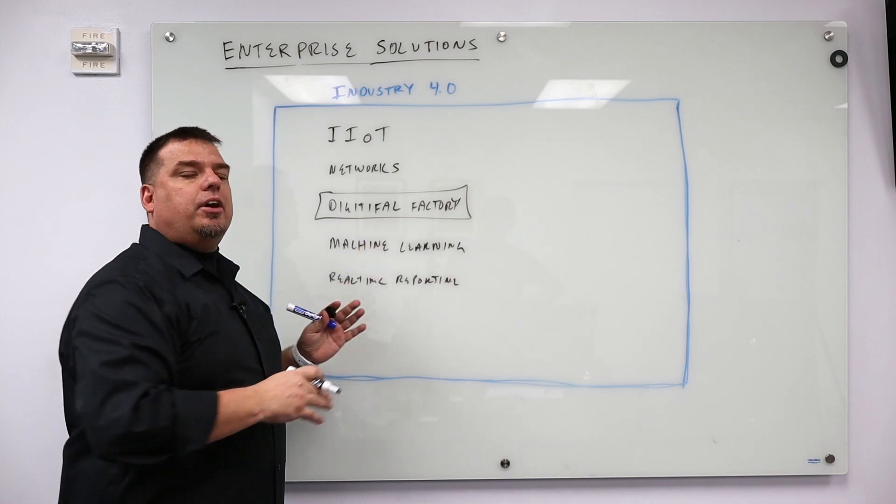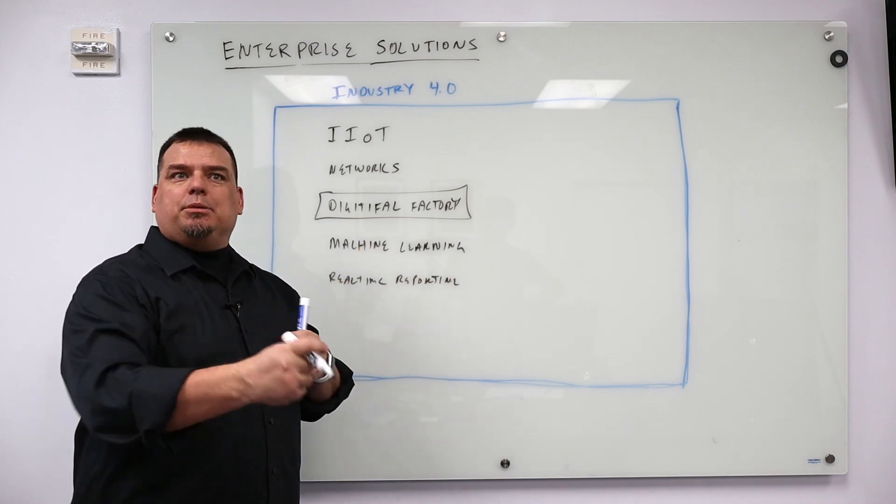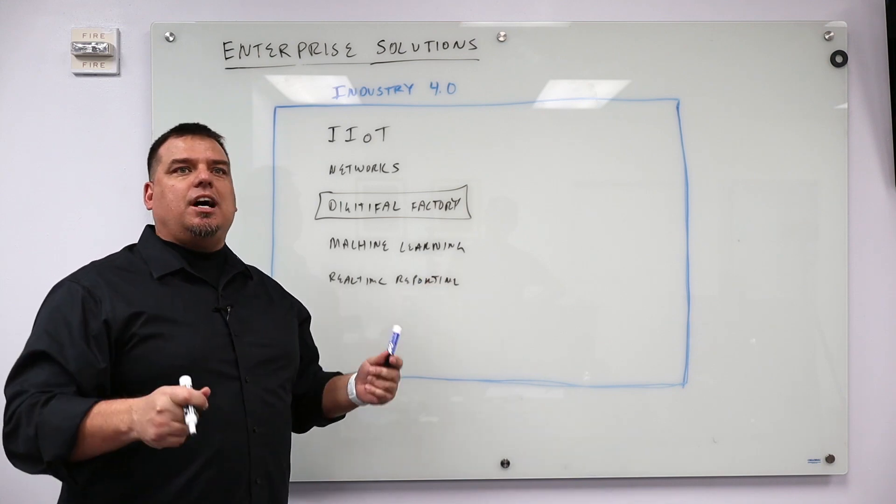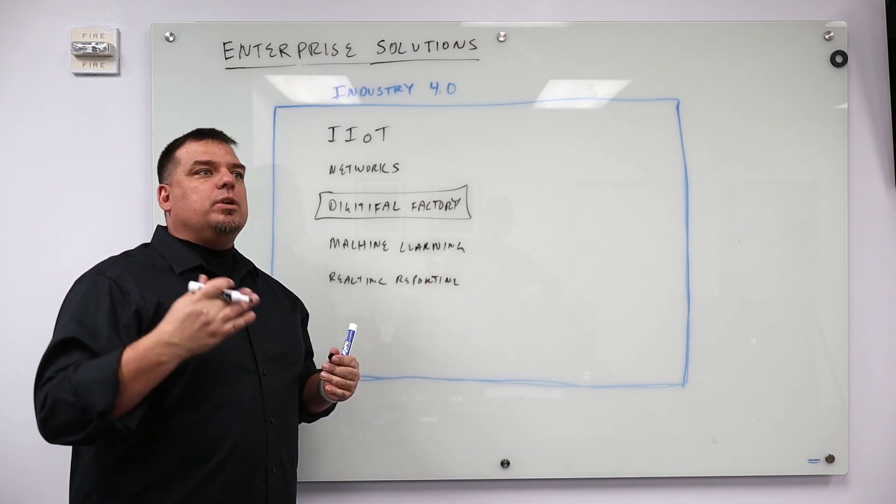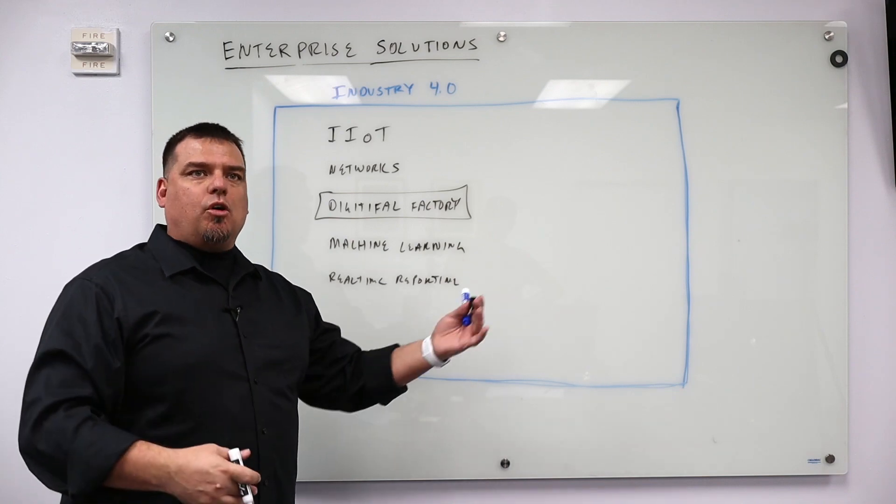What we're trying to do with Industry 4.0 is make our enterprise really, really small. We want to be able to collect data from everywhere in real-time, process it, learn from it, and have it in real-time make our processes more efficient, make us more money, do more with less.